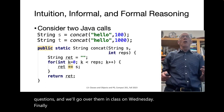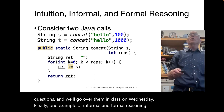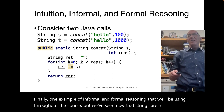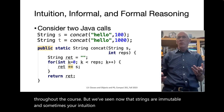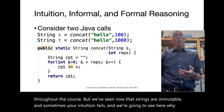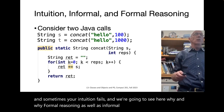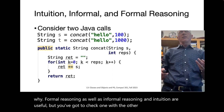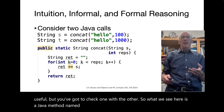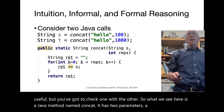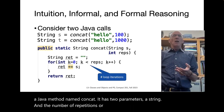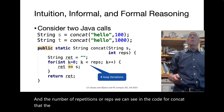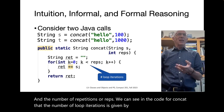Now one example of informal and formal reasoning we'll use throughout the course: strings are immutable, and sometimes your intuition fails. Here is a Java method named concat. It has two parameters: a string and a number of repetitions, or reps. The number of loop iterations is given by that second parameter — the for loop starts at zero, goes up to but not including reps, and is incremented by one.